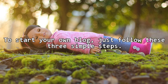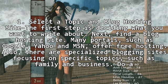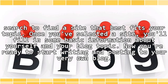To start your own blog, just follow these three simple steps. Step one: select a topic and blog hosting site. The first step is deciding what you want to write about. Next, find a blog hosting site. Many portals, such as Google, Yahoo, and MSN, offer free hosting. Also, there are specialized blogging sites focusing on specific topics, such as family and business. Do a search to find a site that best fits your topic.